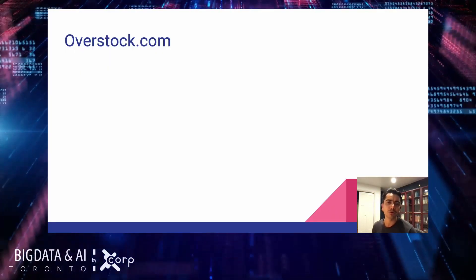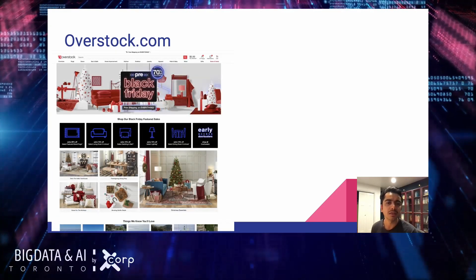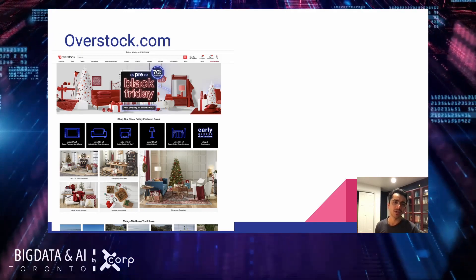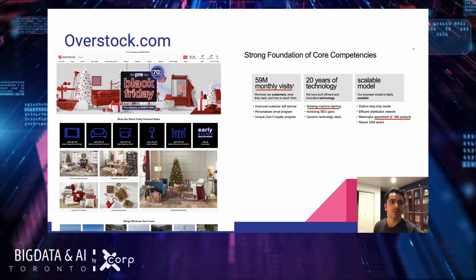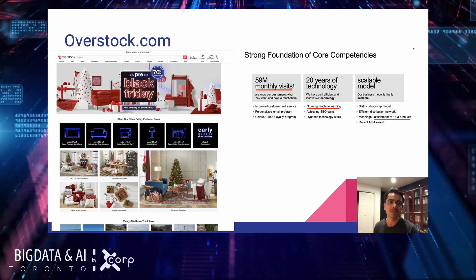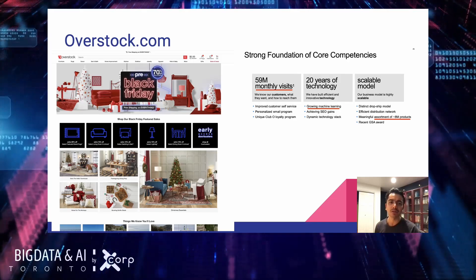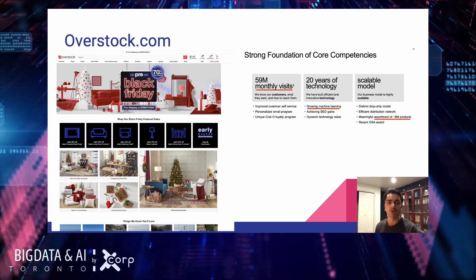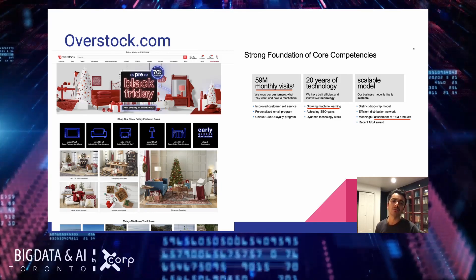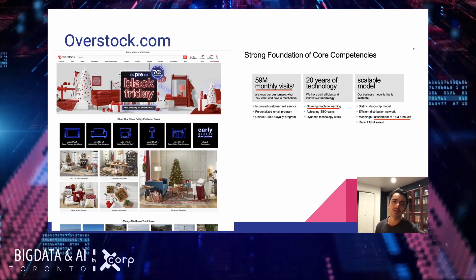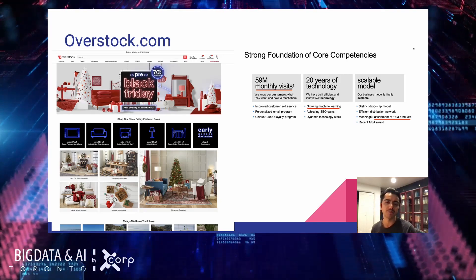Quickly, before we go into the topic, I wanted to introduce Overstock. Overstock is a retail e-commerce company with over 59 million monthly visits. We have a growing machine learning function that we continue to rely on more for our business operations, and we manage multiple sellers with an assortment of over 8 million products.